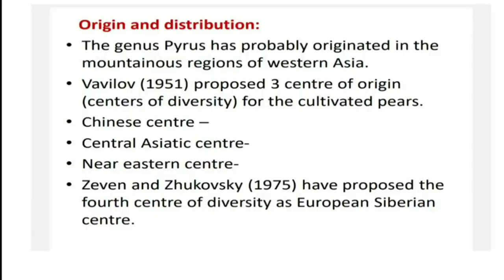Now Origin and Distribution. The genus Pyrus has probably originated in the mountainous regions of Western Asia. The scientist Vavilov in 1951 proposed three centers of origin and centers of diversity for the cultivated pears: first, the Chinese center; second, the Central Asiatic center; third, the Near Eastern center. After that, Jivan and Zhukovskyi in 1975 proposed the fourth center of diversity as the European-Siberian center.